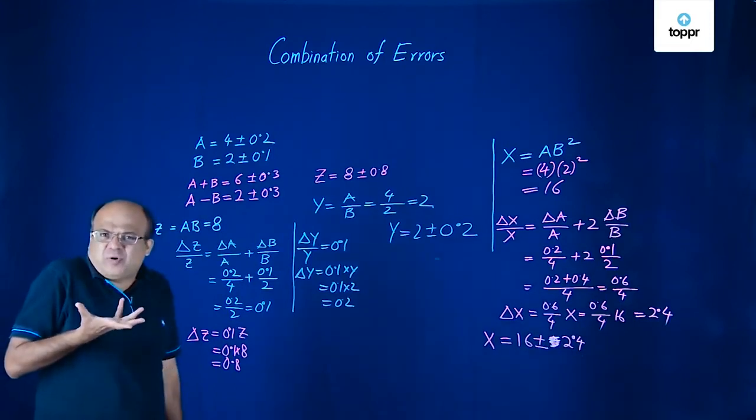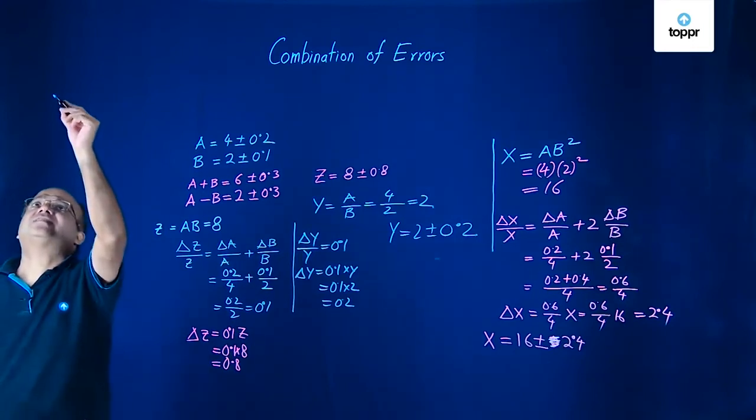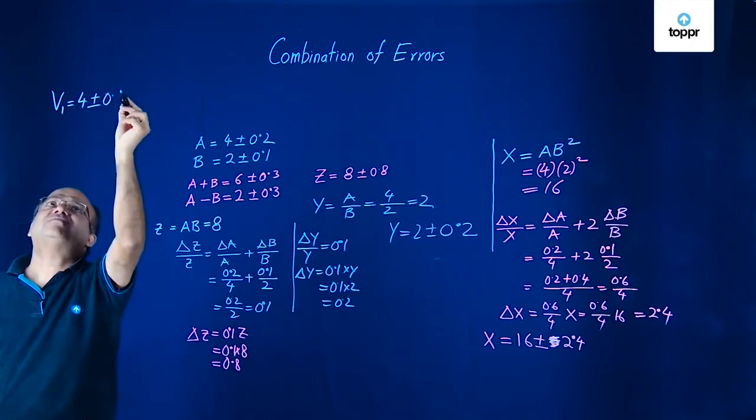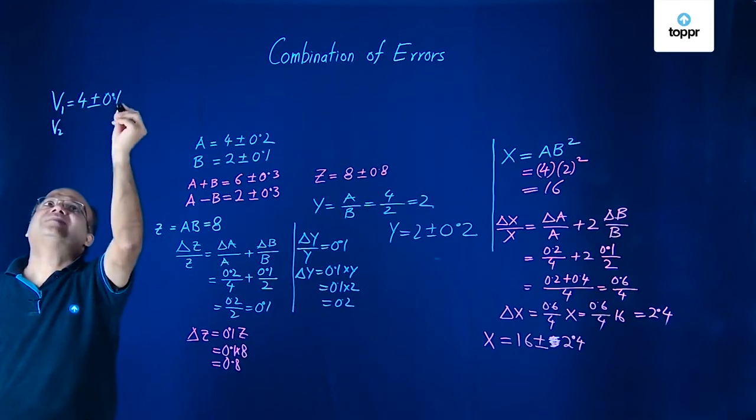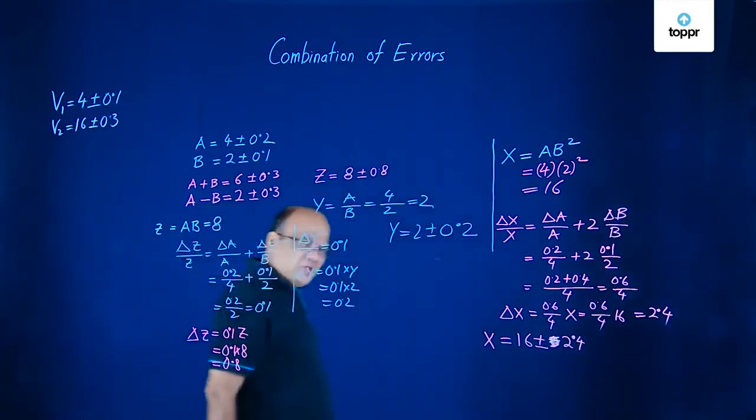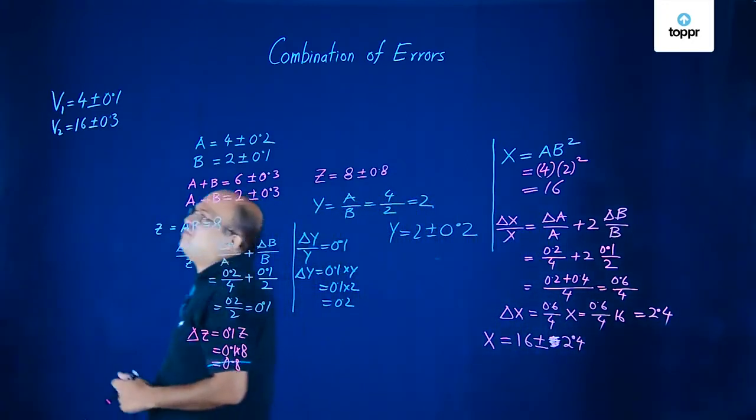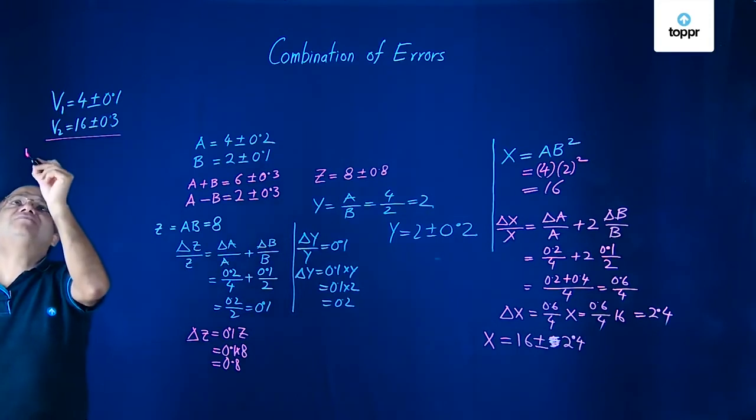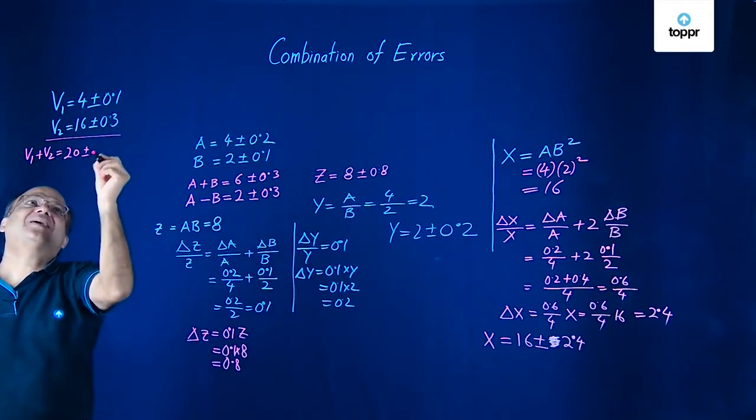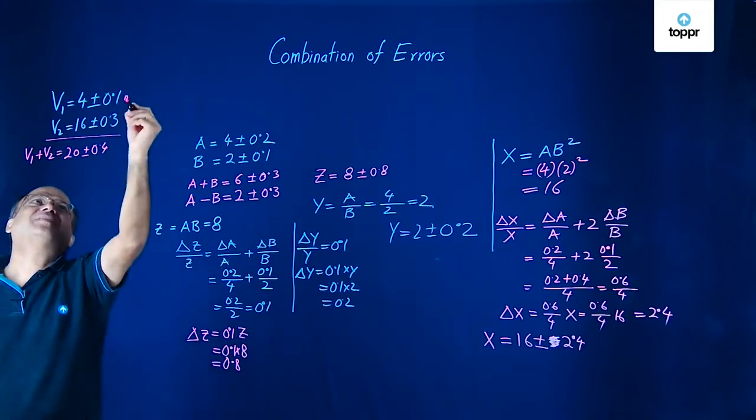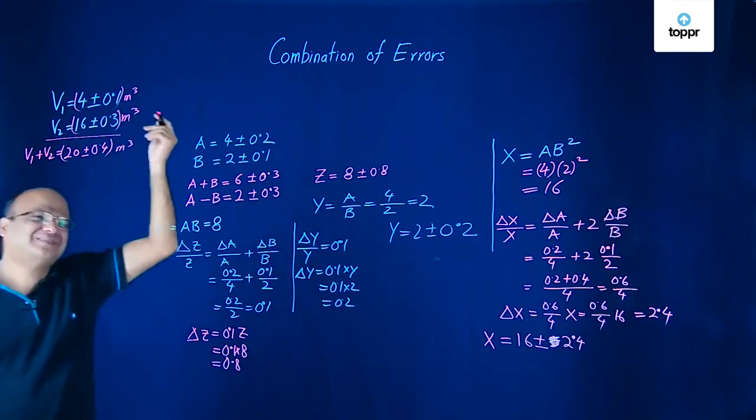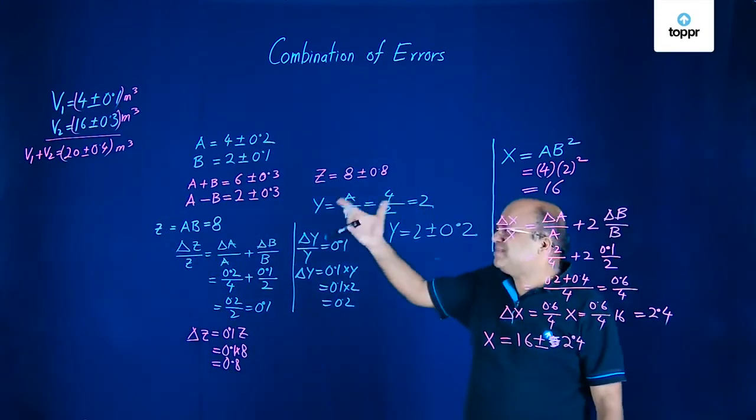Now let us look at one more problem. Suppose volume of one object is 4 plus minus 0.1 C. Volume of second object is 16 plus minus 0.3. Question is find the volume sum and difference in volumes with error limits. So what will be the sum? V1 plus V2. Add the volumes. So you get 20. Add the errors. You get 0.4. Whatever units are there. Then this will be meter cube. Then this is also meter cube. Then this is also meter cube. If you want you can put some nice brackets here. So this is the sum of volumes with error limits. Very very easy.